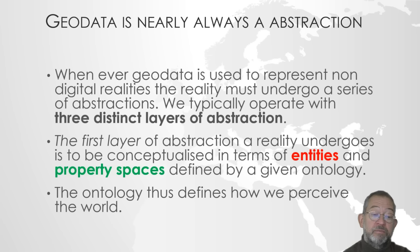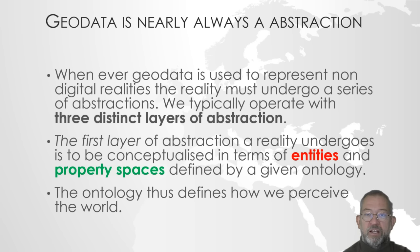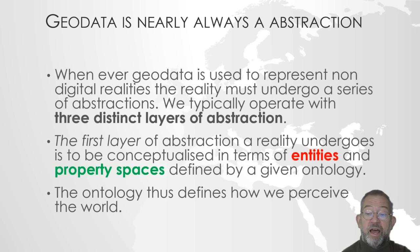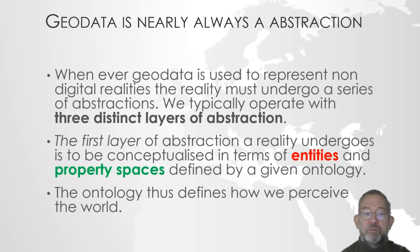The first layer of abstraction that reality must undergo is conceptualization — we must have some terms that we talk about. If we don't define a table, we can't say that here's a table. So we create what we call entities, which are physical things and objects, and property spaces — a field such as temperature that is defined everywhere. An entity is an object at a given location, while a property space is a property distributed across space, such as temperature, air pressure, and so on. These together give what we call an ontology.